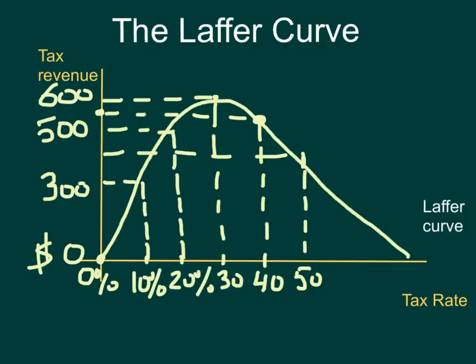Arthur Laffer said that there is a certain optimum tax rate where the government receives the most amount of tax revenue. When the rate is very low and you increase the tax percentage, tax revenue rises — but then it reaches a peak. After that peak, even though the tax rate percentage increases, the tax revenue for the government actually decreases.